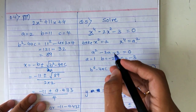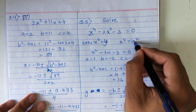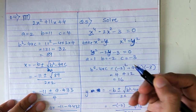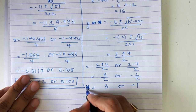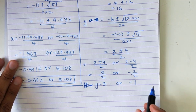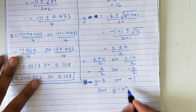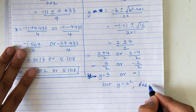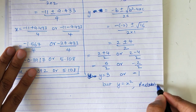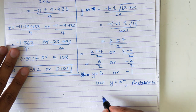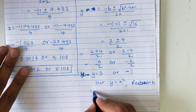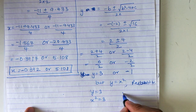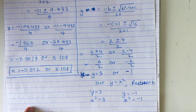So y is 3 or minus 1. But y equals x squared — we took x squared as y — so I will resubstitute. y is 3 means x squared equals 3. The second case: y is minus 1 means x squared equals minus 1.